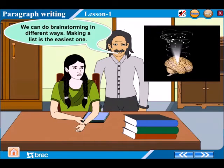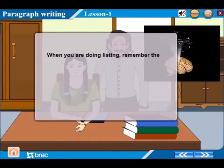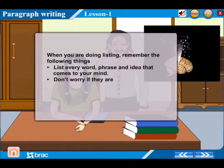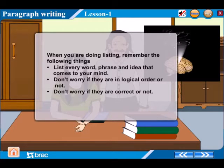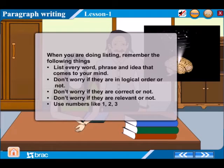We can do brainstorming in different ways. Making a list is the easiest one. When you are doing the listing, remember the following things: list every word, phrase, and idea that comes to your mind. Do not worry if they are in logical order or not, if they are correct or not, or if they are relevant or not. Use numbers like 1, 2, 3.